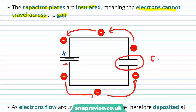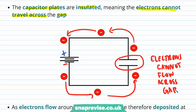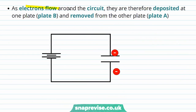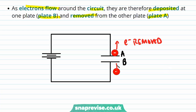As the electrons flow around the circuit, they are deposited at one plate — plate B — and removed from the other plate — plate A. Because the capacitor plates are metal, they can supply electrons to the circuit. So electrons will be removed from plate A and deposited on plate B.